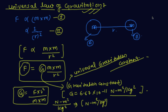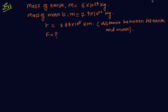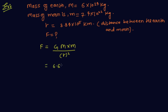Let us now discuss an example. The mass of the earth M is 6 × 10²⁴ kg, the mass of the moon is 7.4 × 10²² kg, and the distance between the earth and the moon is 3.84 × 10⁵ km. Calculate the force exerted by the earth on the moon. We know that F = G × M × m / r². So G is 6.67 × 10⁻¹¹, capital M is 6 × 10²⁴ kg.